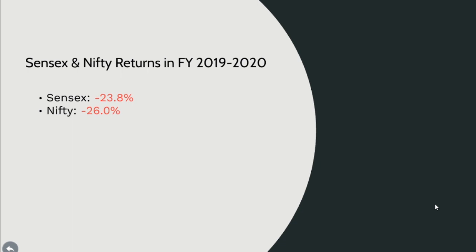In the last financial year, Sensex gave a minus 23.8 percent return and Nifty gave a minus 26 percent return. The last three months affected a lot, but over the one-year period the market collapsed from Sensex 42,000 to nearly 29,000. If we invest now, we can clearly get high returns when the market hits 40,000 again in the future — that is how we should look at it.